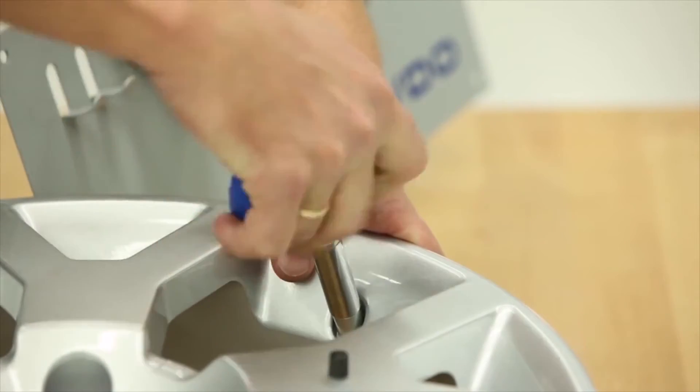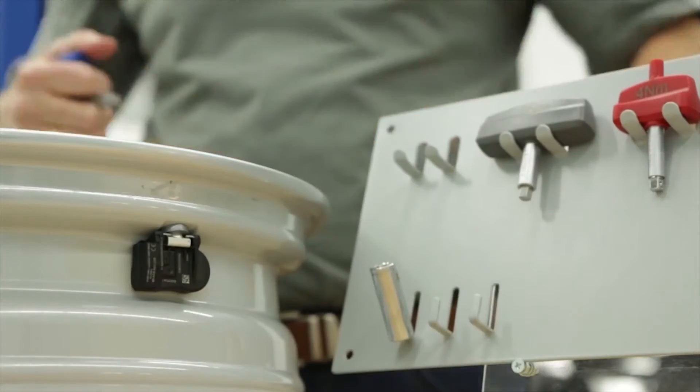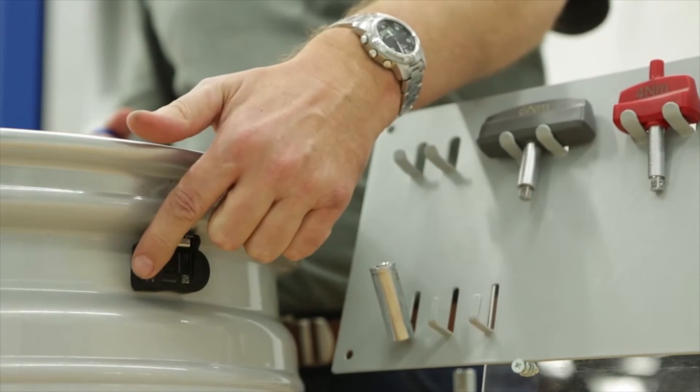It's also important to make sure that the sensor housing is lying flat against the rim surface and is not up in the air or fitted crooked.